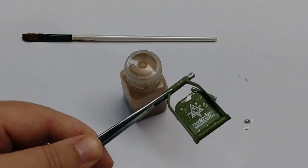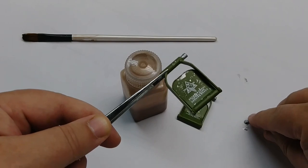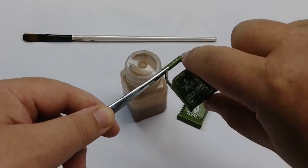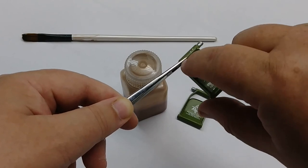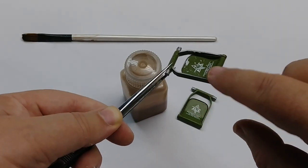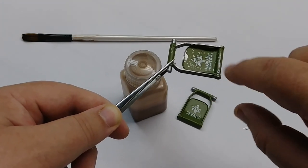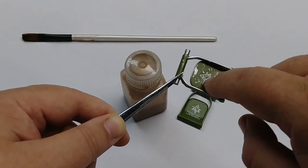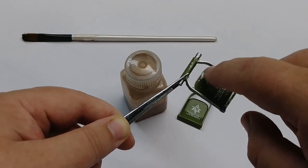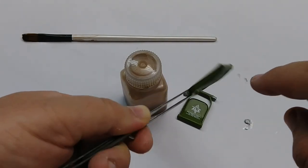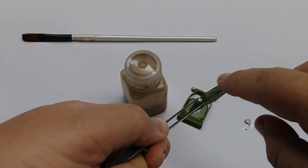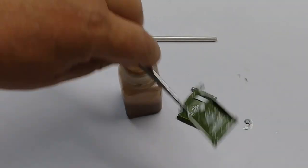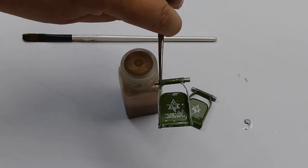Now to give it the worn look around the edges I just take my finger, put a little bit on it, and I just run along these edges just like that. It doesn't take much. Anywhere that there's a potential rub point that's where I put it. I'm just basically barely touching it, I'm not pressing down hard. Now we've got a worn pedal.